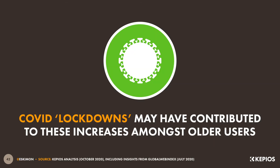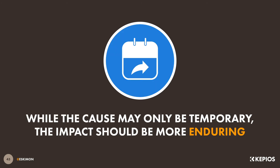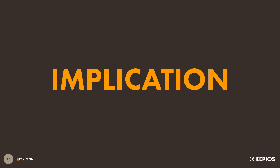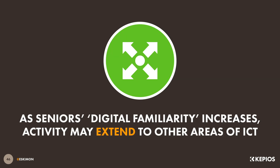As I alluded to earlier, my hypothesis is that COVID-19 has played a meaningful role in these trends, as older people try to stay in touch with younger family members whilst following social distancing guidelines. However, while the cause of these trends may only be temporary, there is a good chance that their impact will be much more enduring. That's because social media tends to be a high-frequency activity, with data from various platforms indicating that more than half of all users are active every day. So if seniors also use social media on this regular basis, their overall levels of digital familiarity should increase, resulting in greater confidence and adoption of other areas of ICT.